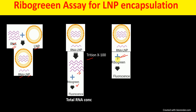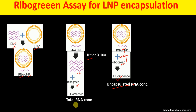In the untreated sample, when we treat the lipid nanoparticle with RiboGreen, the RiboGreen will bind only to the freely available, non-encapsulated RNA. RiboGreen cannot bind to the RNA that is encapsulated inside the lipid nanoparticle. The fluorescence measured here will therefore correspond to the concentration of unencapsulated RNA.